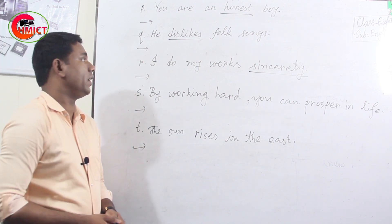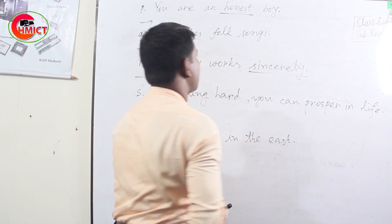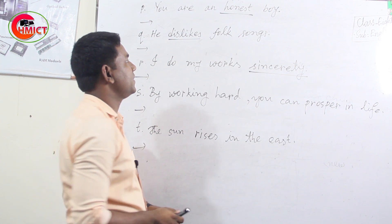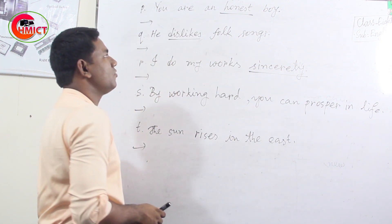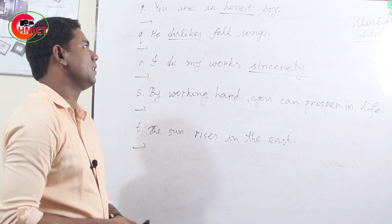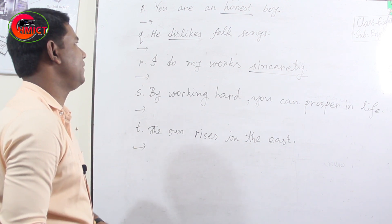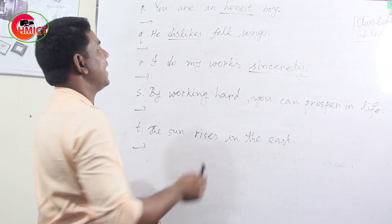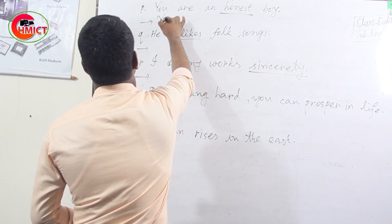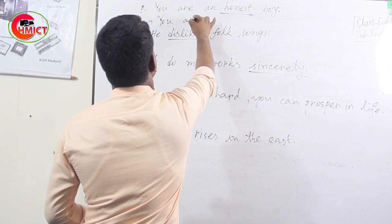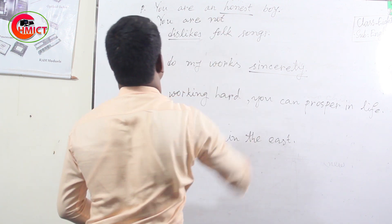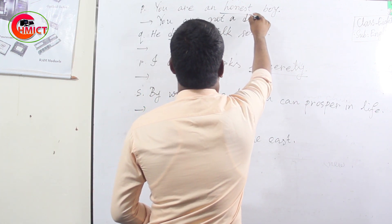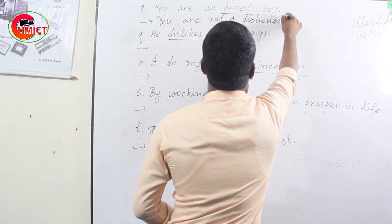For sentence P: 'You are an honest boy.' The underlined word is 'honest', which is an adjective. You can use 'not' plus the antonym of the adjective. The antonym of 'honest' is 'dishonest'. So: 'You are not a dishonest boy.' I used the article 'a' because the first letter of the adjective 'dishonest' is D, a consonant sound.